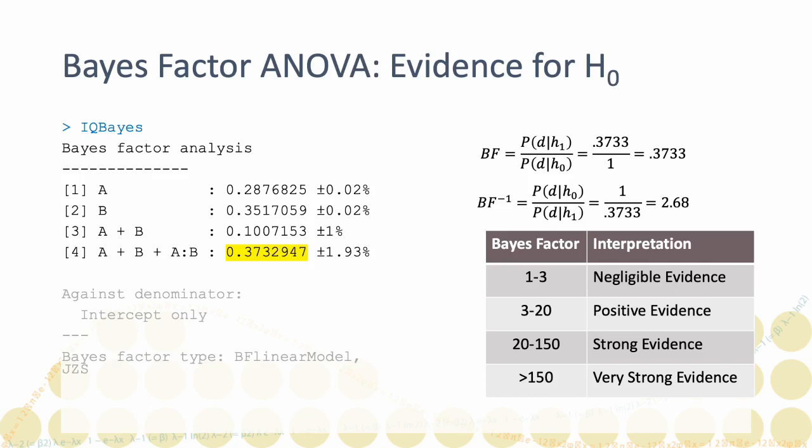Granted, that still amounts to negligible evidence, but considering that the standard ANOVA might have been interpreted as clearly in favor of the alternative hypothesis, this is a remarkable turn of events, and provides you with a possible strategy should you ever need to somehow provide evidence for the null hypothesis.